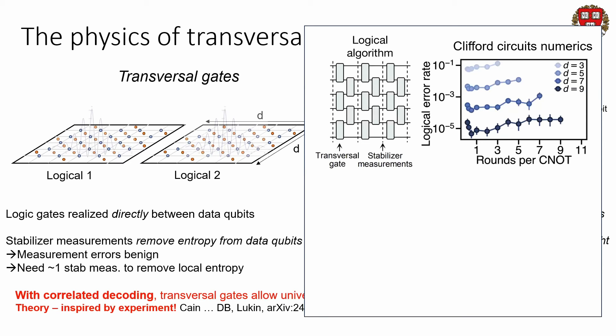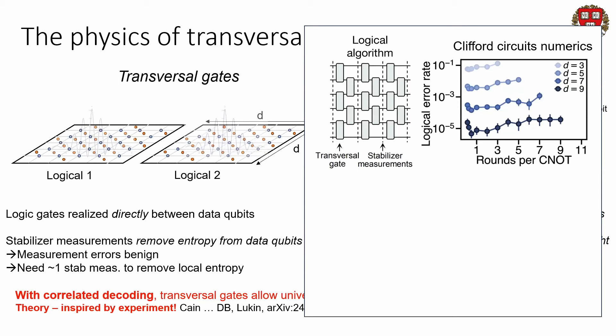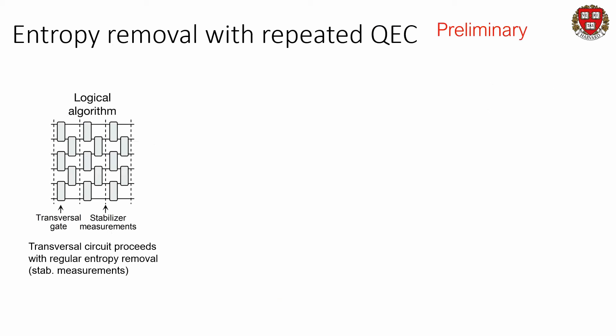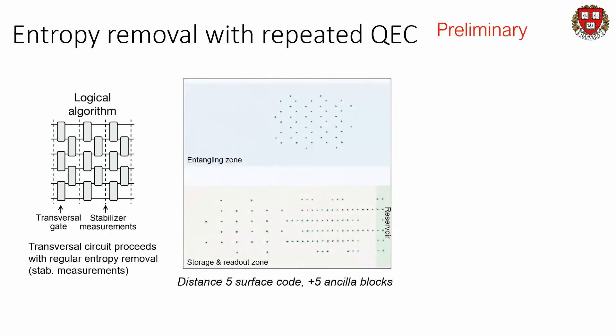The mental model for this computation is: we have an algorithm being done between logical qubits with transversal gates, and then we're doing stabilizer measurements. We see in numerics that we can greatly reduce the number of rounds of error correction needed for an entangling operation. Now what we're studying is entropy removal with repeated error correction. We have an array of 5×5 qubits making a distance-5 surface code inside our entangling zone, with an interlaced ancilla block doing stabilizer measurements. We also have a storage and readout zone where other ancilla blocks do additional rounds of error correction.